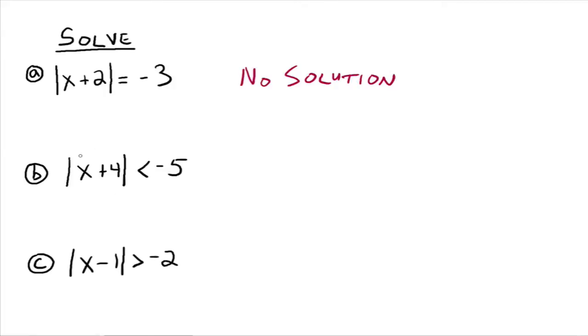Same situation down here. If you have the absolute value of an expression that's less than negative 5, you can't have a number whose distance from 0 is less than negative 5. That doesn't make any sense. So again, this is no solution.